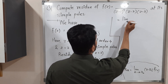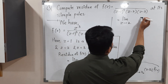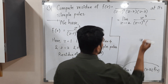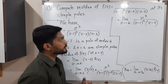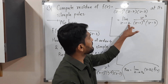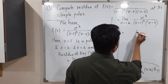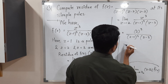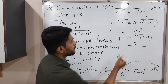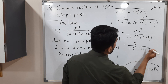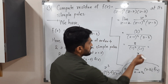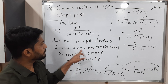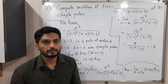After cancellation, this equals limit z tends to 2 of z cube upon (z minus 1) raise to 4 times (z minus 3). Now we solve the limit by substituting z equal to 2: 2 cube is 8, upon 2 minus 1 raise to 4 times 2 minus 3. That gives 8 upon 1 raise to 4 times minus 1, which is 8 upon minus 1, so the answer is minus 8. So we got the residue of f at z equal to 2. We have one more simple pole, that is z equal to 3.